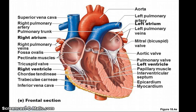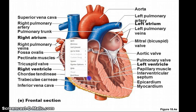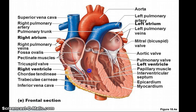To summarize the pulmonary circuit pathway: start at the right atrium, through the right ventricle, up through the pulmonary trunk, and out through the left and right pulmonary arteries to the lungs.